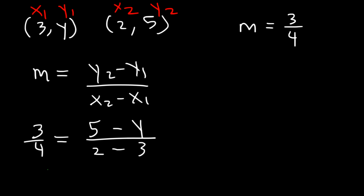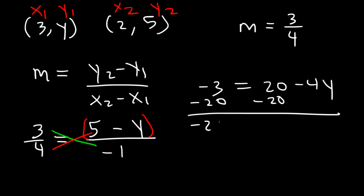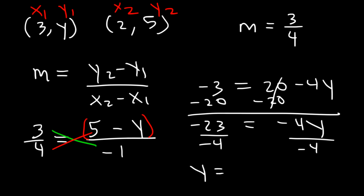Let's cross-multiply. First, we can simplify 2 minus 3, which is negative 1. Now cross-multiplying: 3 times negative 1 is negative 3, and that equals 4 times (5 minus y). Distribute the 4: 4 times 5 is 20, 4 times negative y is negative 4y. Subtract 20 from both sides: negative 3 minus 20 is negative 23, equal to negative 4y. Divide both sides by negative 4. So y is equal to 23/4.